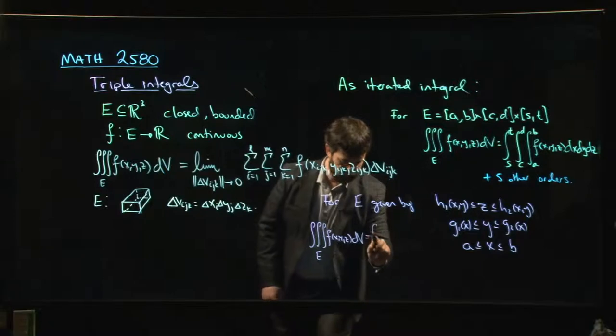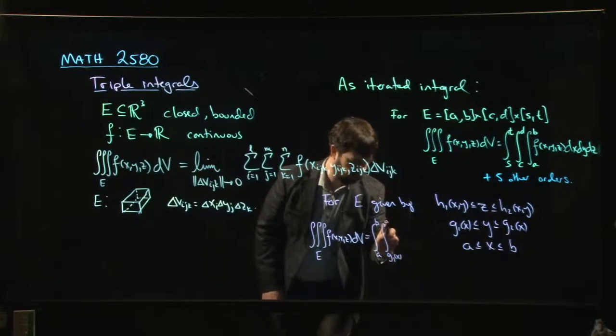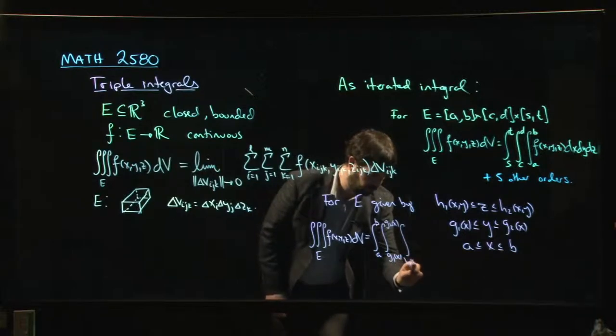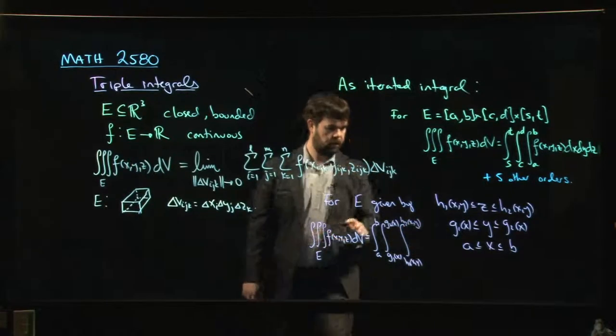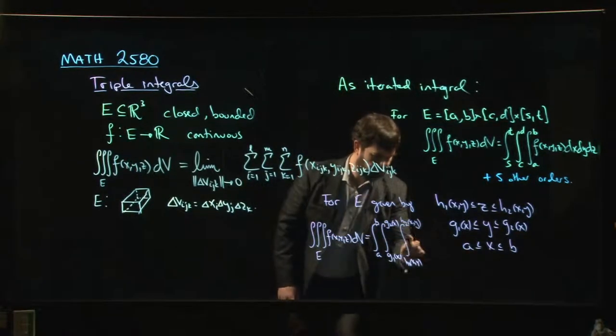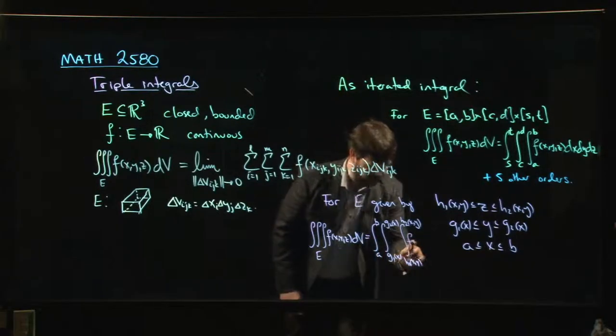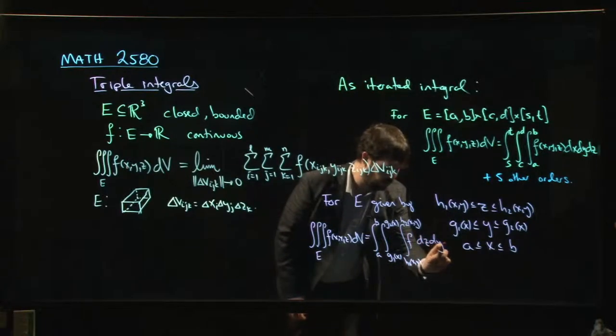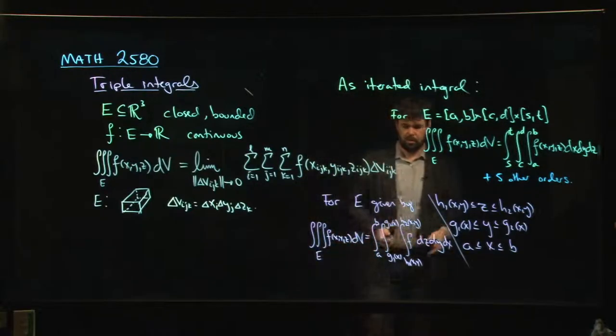So we're going to have X from A to B, Y from G₁ to G₂, Z from H₁ to H₂. We put in our F of X, Y, Z, let me skip that because we only have so much room. And then we'd be doing dZ, then we'd be doing dY, then we'd be doing dX. You do it in that order. So that's going to be the sort of standard setup.